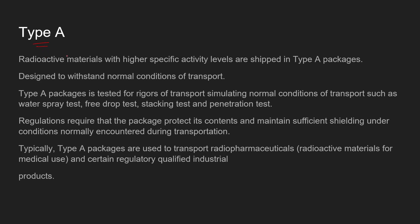Radioactive materials with higher specific activity levels are shipped in Type A packages. These are designed to withstand normal conditions of transport. Prior to departure, Type A packages are tested under conditions simulating normal transport: water spray test, free drop test, stacking test, and penetration test. Regulations require that the package protect its contents and maintain sufficient shielding under normal transportation conditions. Typically, Type A packages are used to transport radiopharmaceuticals for medical use and certain industrial products.